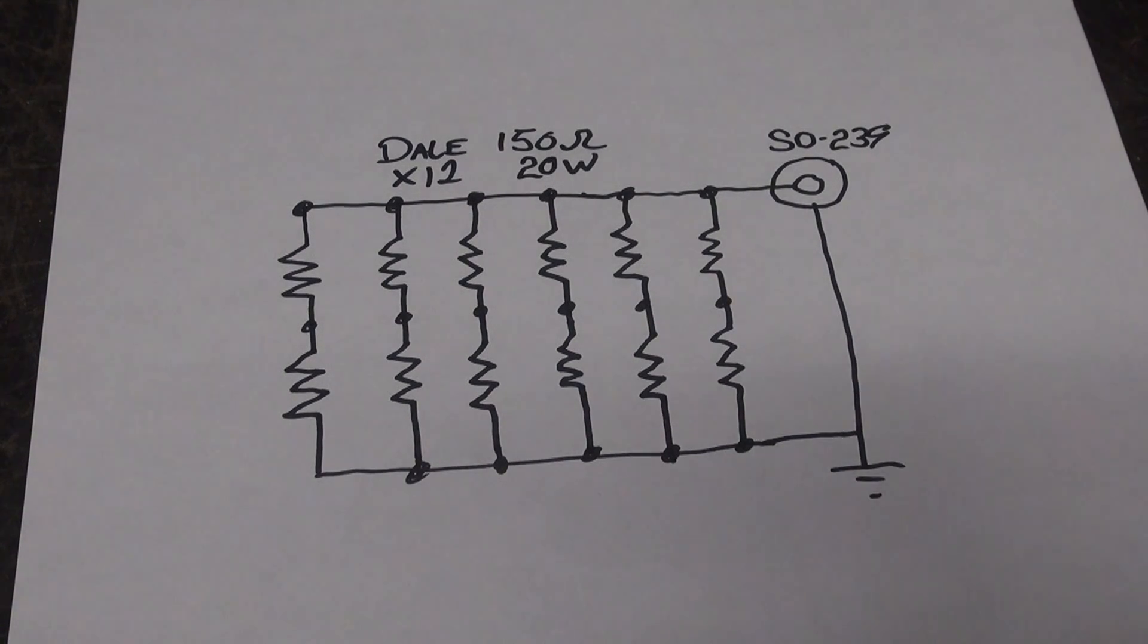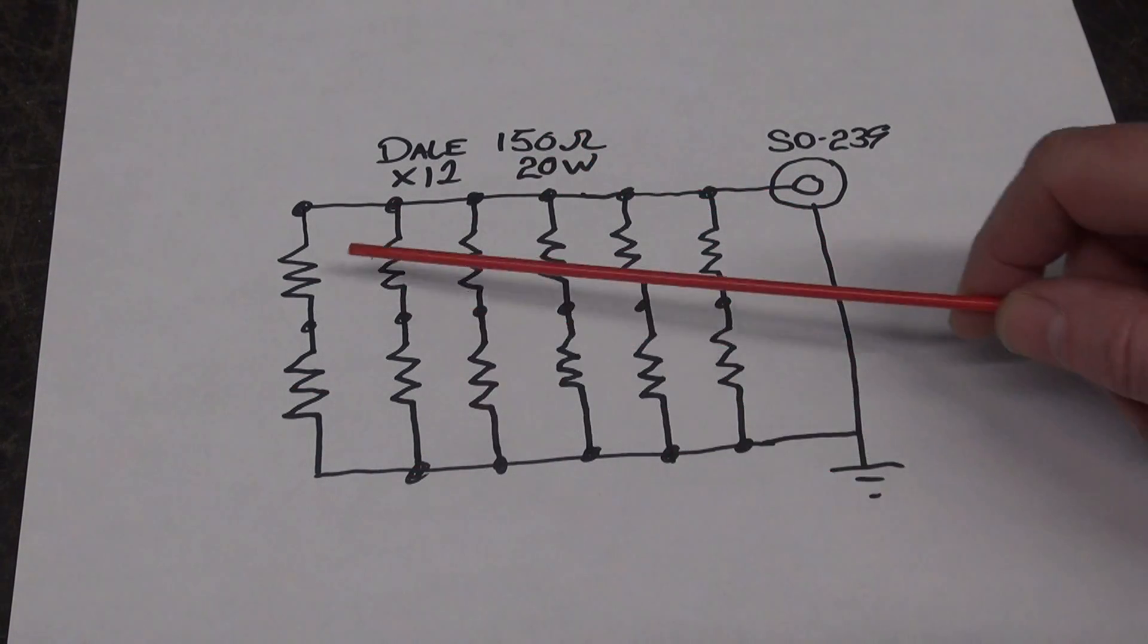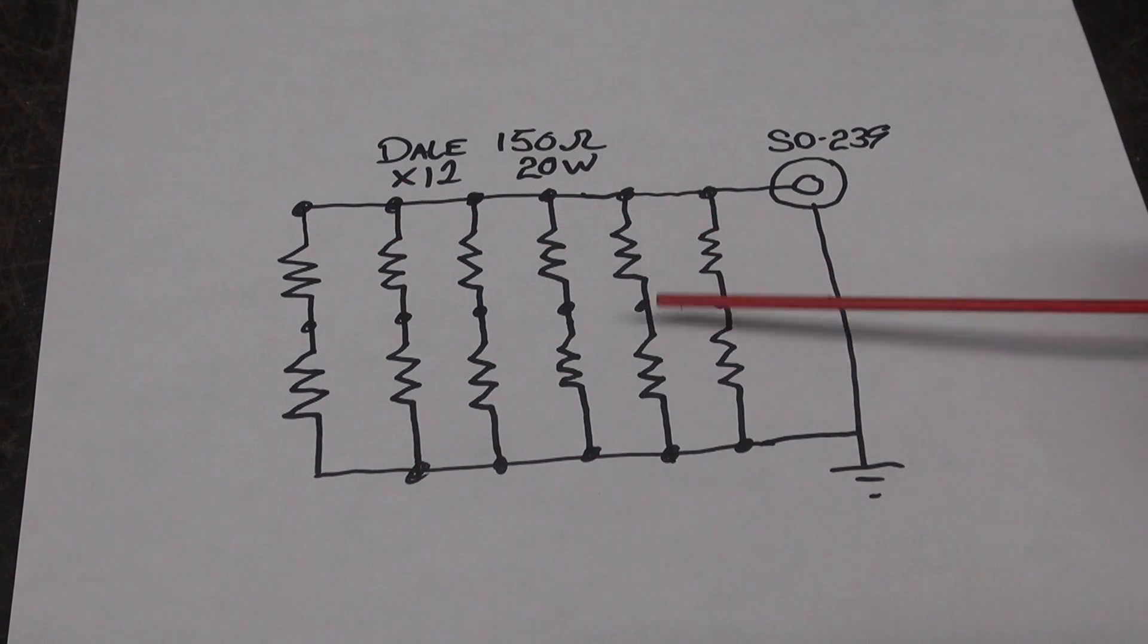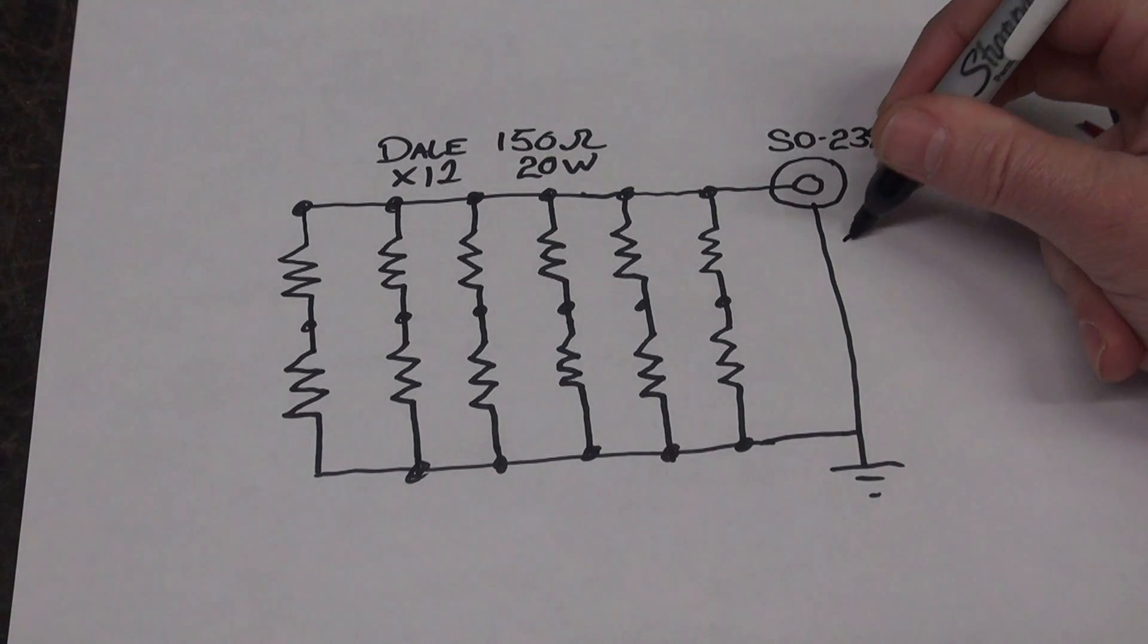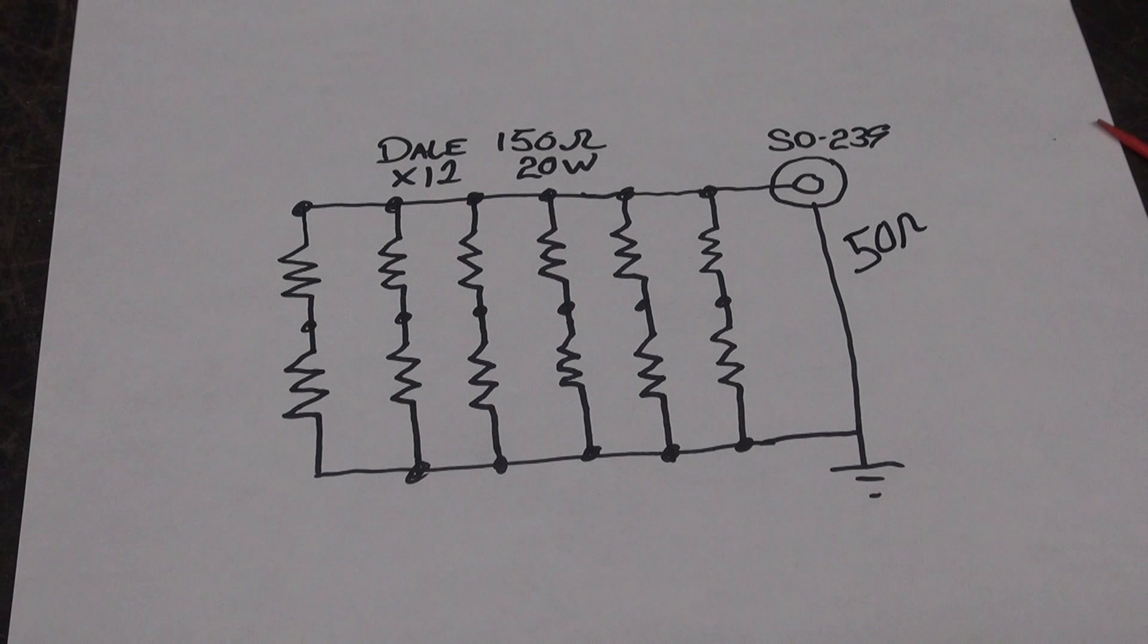For those of you that like to see schematics, this is the diagram for the large dummy load. So all 12 resistors are the Dale 150 ohm 20 watts. These are wired in series and then all the series resistors are in parallel to give you an effective load of 50 ohms. That's what we're looking for for an RF dummy load.